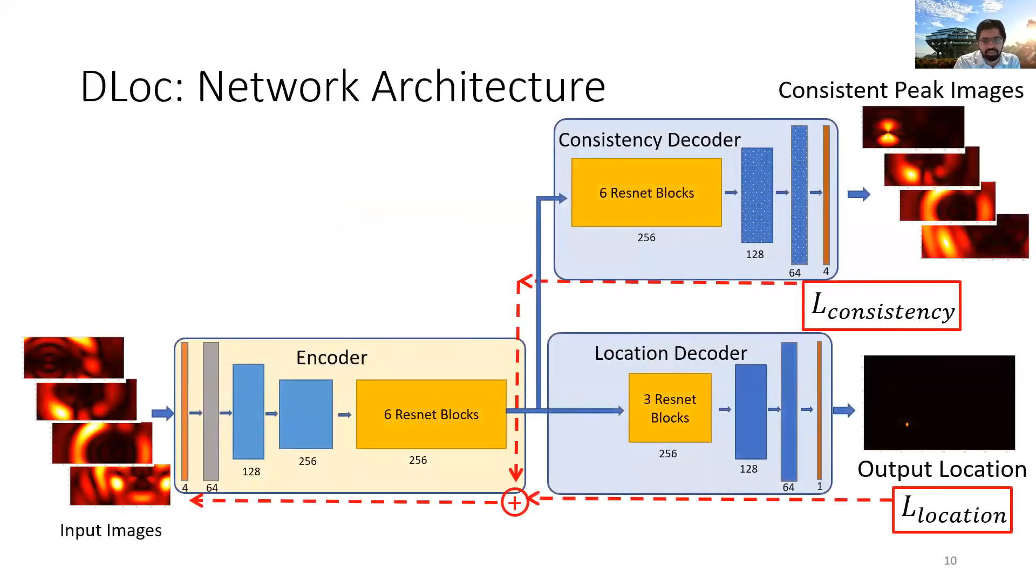We have one encoder that creates an implicit representation of the environment. And then there are two decoders. The bottom location decoder provides us accurate user location. There are a few hardware imperfections due to different devices that we use that are taken care of by the top consistency decoder. And more technical details of the same can be found in a 20 minute video.